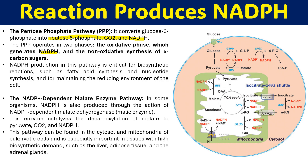The second important reaction producing NADPH involves NADP+-dependent malate enzyme during gluconeogenesis. In some organisms, NADPH is produced through the action of malate dehydrogenase — also called malic enzyme. Additionally, isocitrate dehydrogenase (both mitochondrial IDH2 and cytoplasmic IDH1) can use either NAD+ or NADP+, allowing conversion of NADP+ to NADPH with some flexibility.